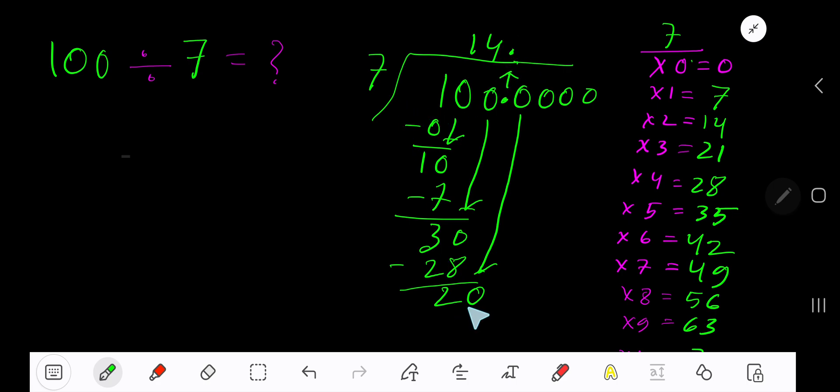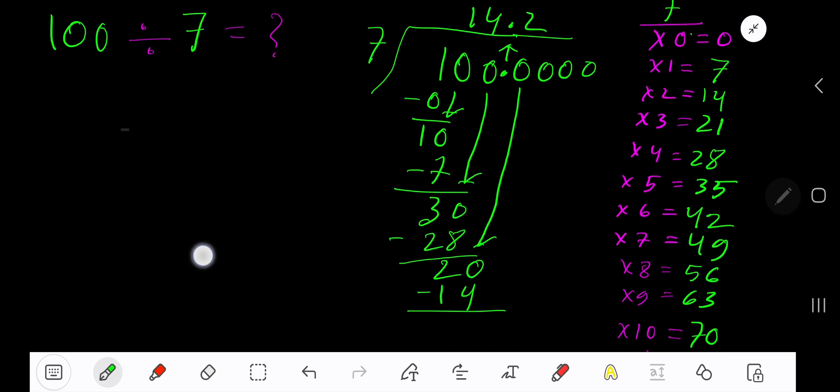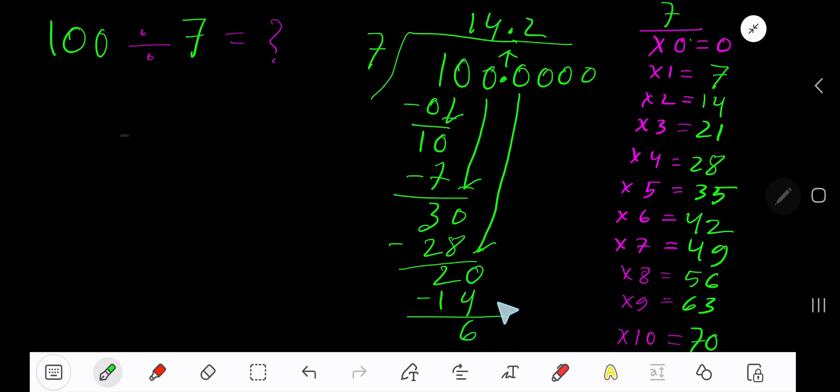7 goes into 20 how many times? 2 times. 2 times 7 is 14, subtract to get 6. Bring down the next 0. 7 goes into 60 how many times? 8 times. 8 times 7 is 56.